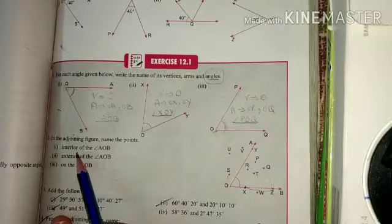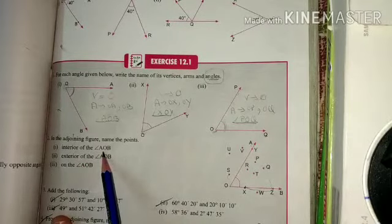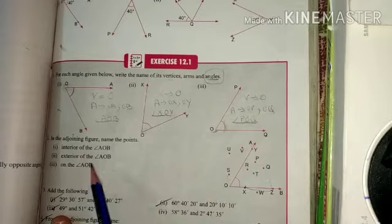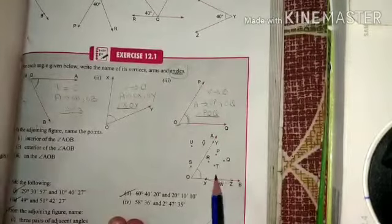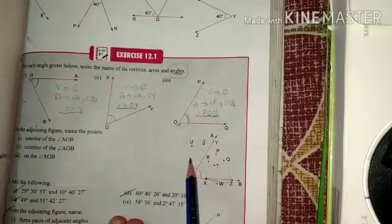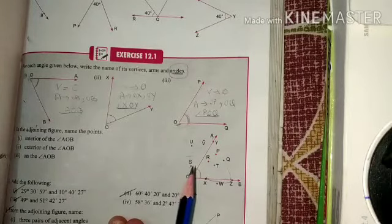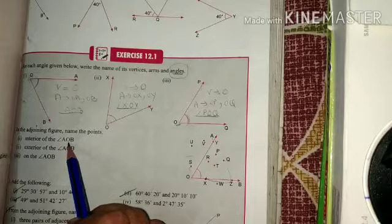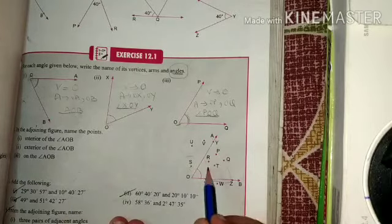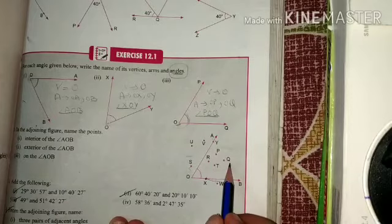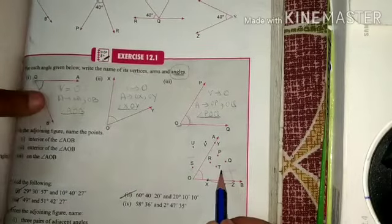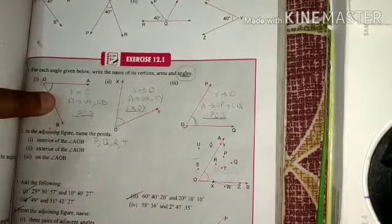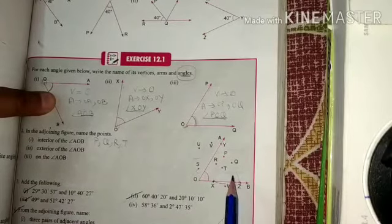First one, they said that name the points which lie in the interior of angle AOB. Secondly, in the exterior of angle AOB. And third is on angle AOB. So here, the points are representing which are interior, exterior, and on the angle. First of all, in the first part, the points which lie on the interior of AOB - interior, that means which lie inside - these points P, Q, R, and T. These are the points which lie inside, interior of angle AOB.